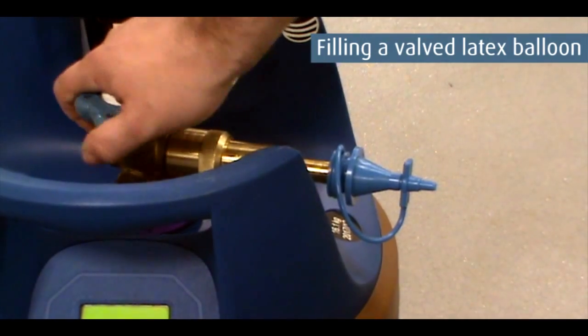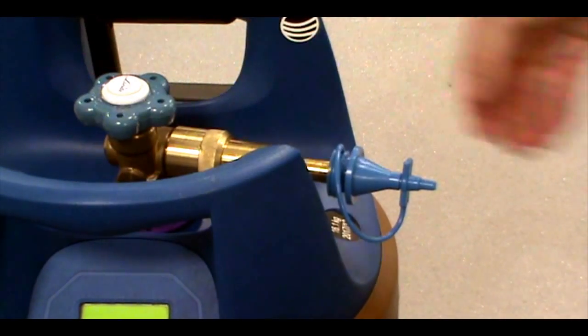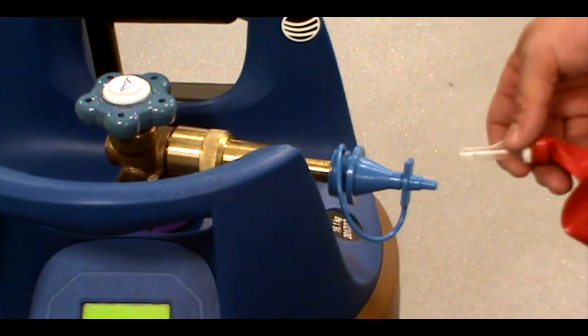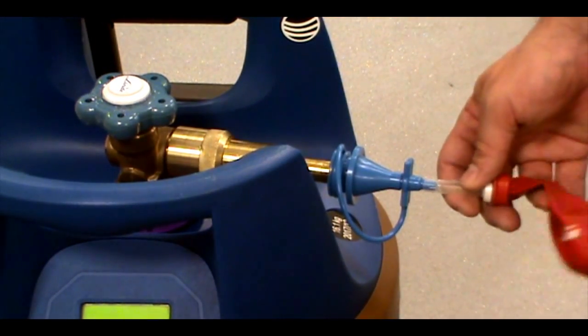To fill a Valve Latex Balloon, attach the Universal Kit. Open the hand wheel valve and place the balloon valve over the outlet. Push the outlet to release gas into the balloon.